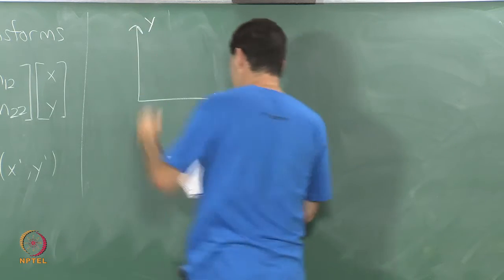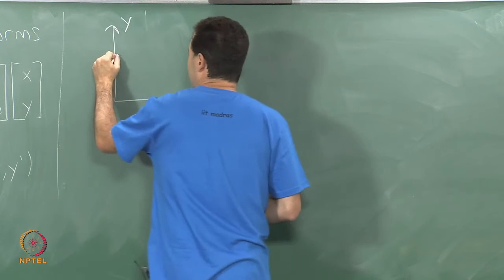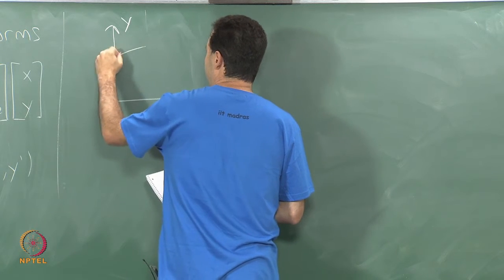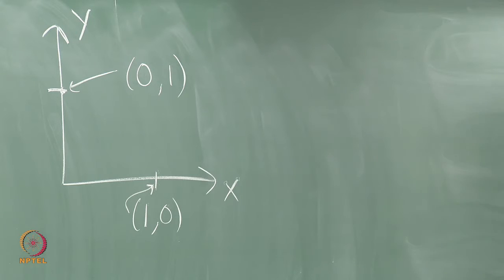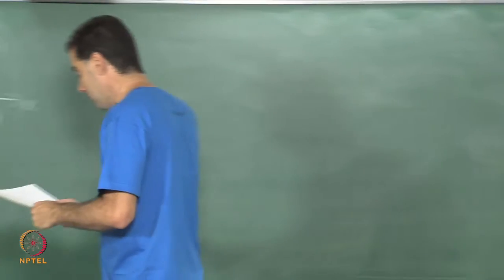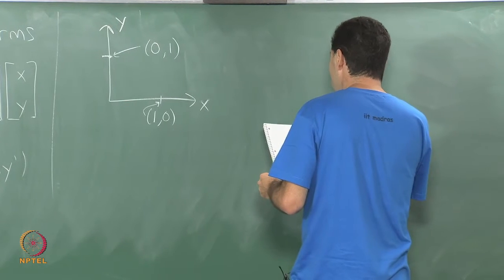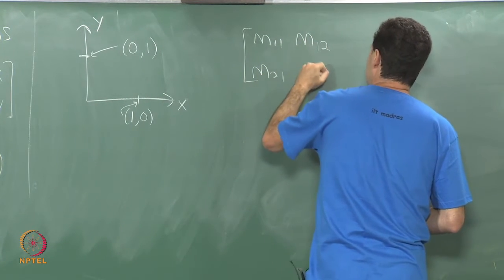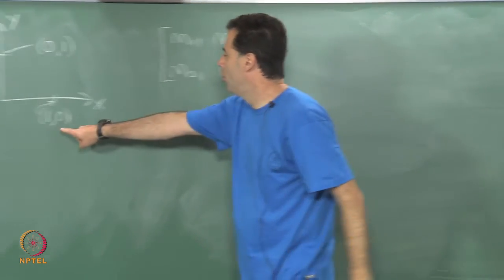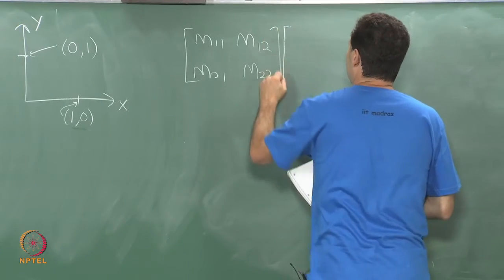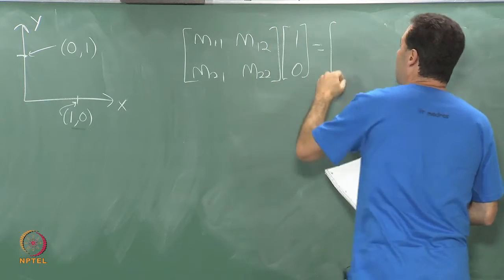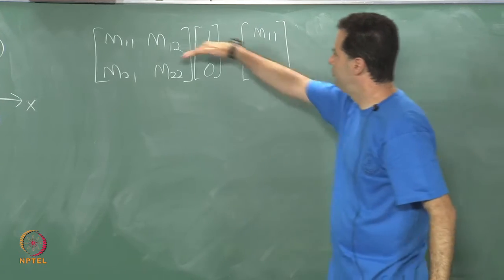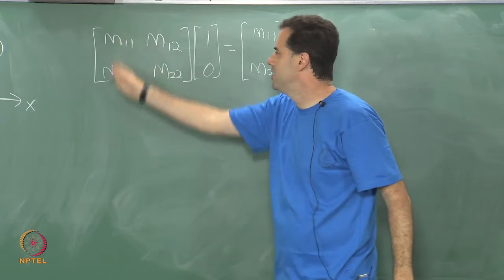Let us draw a 2D Cartesian coordinate system with an x-axis and a y-axis. The simplest case: this is the point (1, 0) and this is the point (0, 1). These are the standard basis vectors we use for Cartesian coordinates. I want to think about what happens to these when we perform our transformation. If we transform (1, 0) using the matrix m11, m12, m21, m22, we get m11, m21 — just the first column.